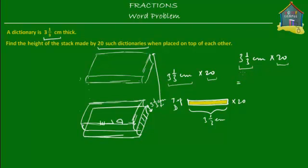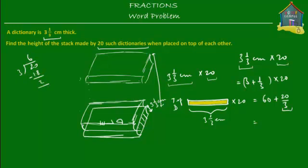So you split 3 and 1/3 into 3 plus 1/3, and you multiply each of these by 20. So 3 times 20 is equal to 60, and 1/3 times 20 is 20/3. Since this is an improper fraction, you can convert it to a mixed number — 20 divided by 3 gives you 6 with a remainder of 2, so 20/3 is equal to 6 and 2/3. This is again equal to 60 plus 6 plus 2/3, and 60 plus 6 is 66, plus the fraction 2/3, which equals the mixed fraction 66 and 2/3.